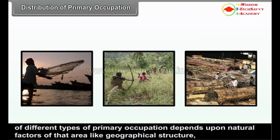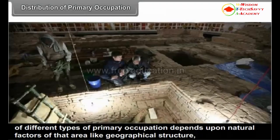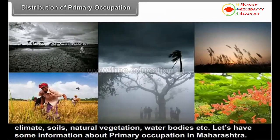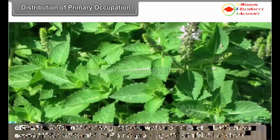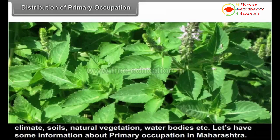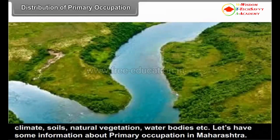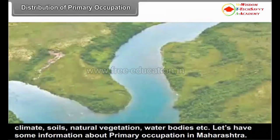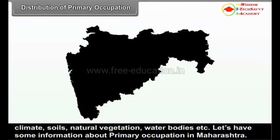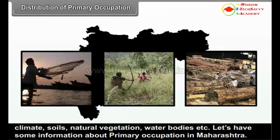Distribution of primary occupations depends upon natural factors of that area like geographical structure, climate, soils, natural vegetation, water bodies, etc. Let's have some information about primary occupation in Maharashtra.